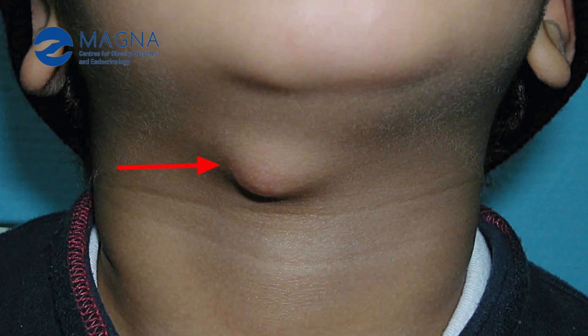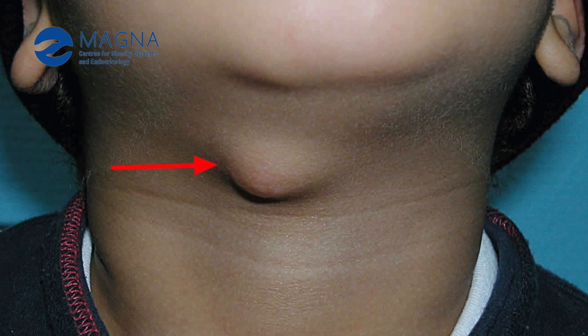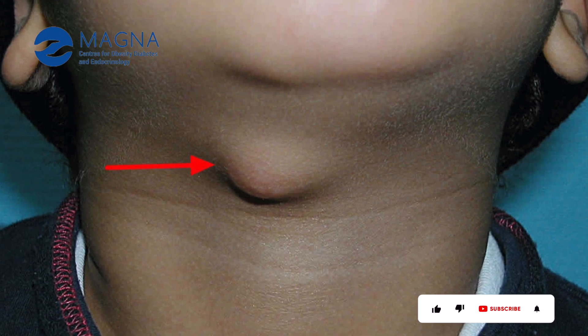In that case, the cyst may start to separate and break out through the skin on top of it. In such a situation, the infected cyst needs to be treated with antibiotics, and if it keeps getting infected again, you may need to go for surgical removal.